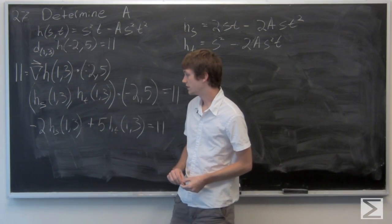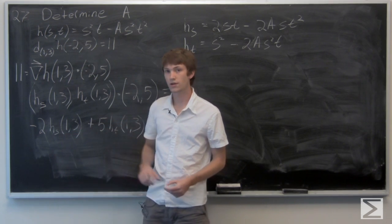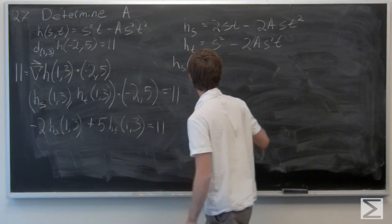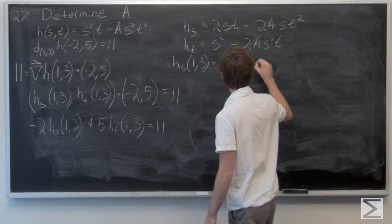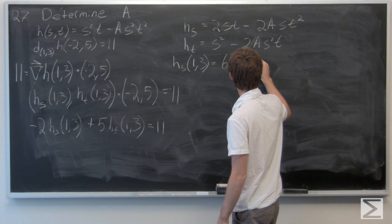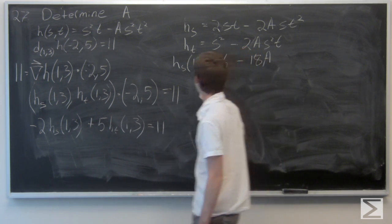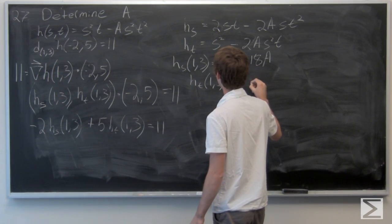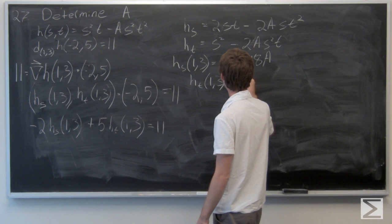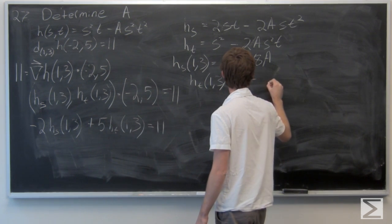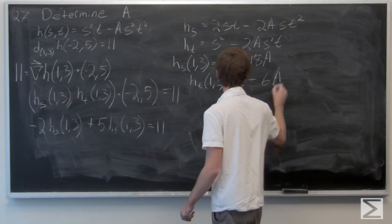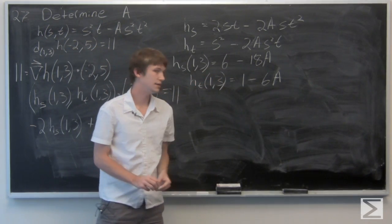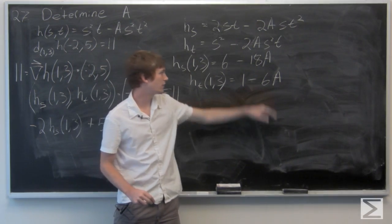Now we know that the point we want to evaluate at is (1,3), so we can go ahead and do that. So ∂h/∂s at (1,3) is 6 minus 18a, and ∂h/∂t at (1,3) is 1 minus 6a.